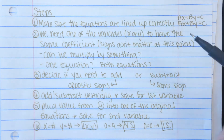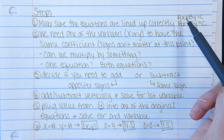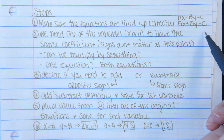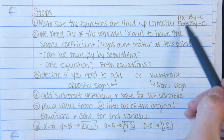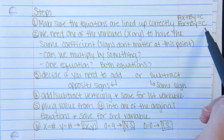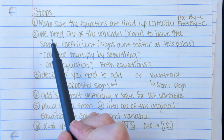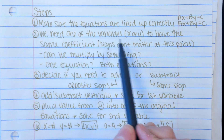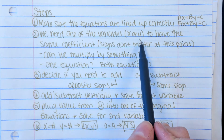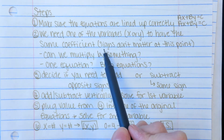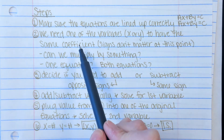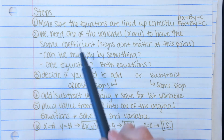Step one: make sure the equations are lined up correctly. You want the x's, the y's, the equal signs, and the constants to be lined up — matching vertically. Step two: we need one of the variables, x or y, to have the same coefficient. The signs don't really matter at this point. We just want to make sure one of the variables has the same coefficient. Sometimes your equations are already ready to go — they have a variable with matching coefficients — and you can go on to step three.